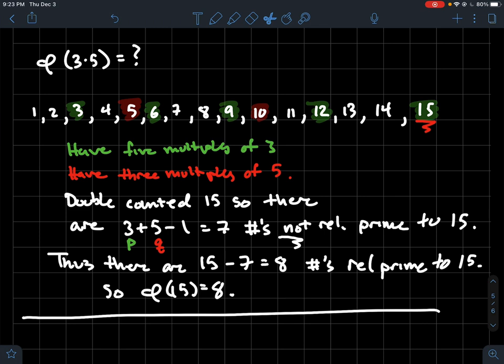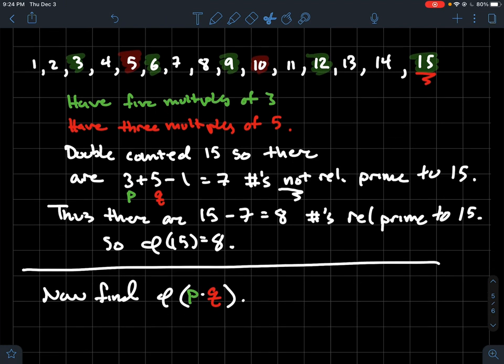What we want to do is just generalize this idea to any two primes p and q. And I've tried to write it down here. The idea is, again, instead of right off the bat counting how many numbers are relatively prime to p times q, it's much easier to logic out how many numbers are not relatively prime to p times q.